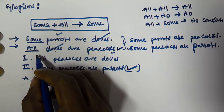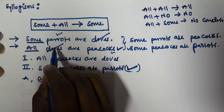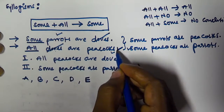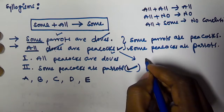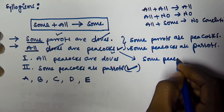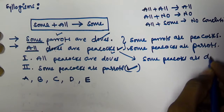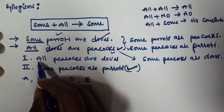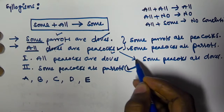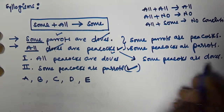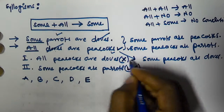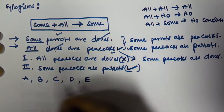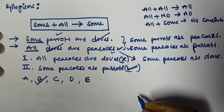When we interchange the subject and predicate, 'all' becomes 'some.' So from the second statement alone we can derive: some peacocks are dogs. But the first conclusion states all peacocks are dogs, which is false since we only derived some peacocks are dogs. Therefore, only the second conclusion is true, so we select option B.